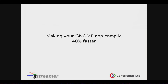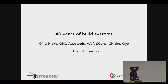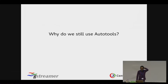But that is also a lie. We are not going to talk about that. First, we're going to talk about 40 years of build systems. We began several decades ago with GNOMAKE. Then came GNOME AutoTools when people realized that they needed to actually build across multiple platforms. Then people started to hate it, and they made a lot of stuff like WAF, SCONS, CMake, JIP, and the list goes on. And yet we still use AutoTools.